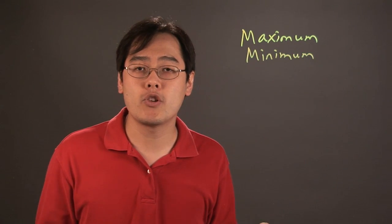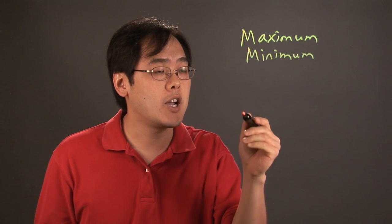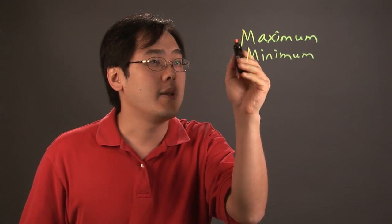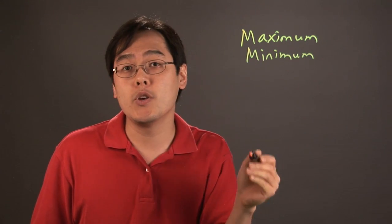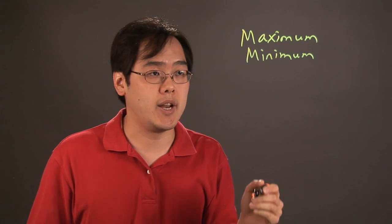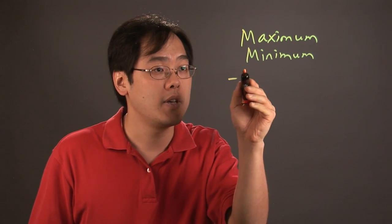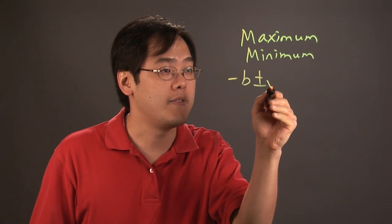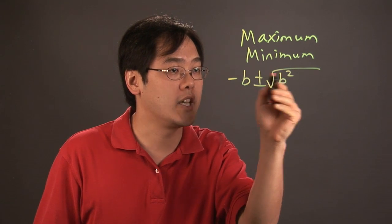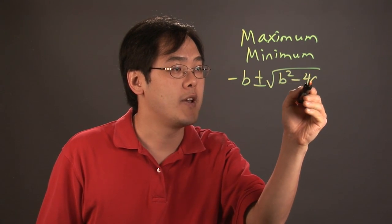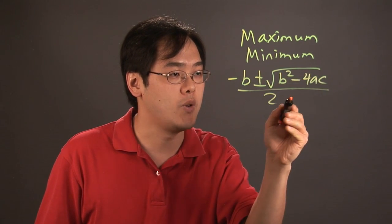But when it comes to applying the quadratic equation, there's a couple of things to consider. Now besides maximum minimum, they may also give you a function that might require to use the quadratic equation. And sometimes it may be necessary to, if not factor, use the quadratic formula: negative b plus or minus square root of b squared minus 4ac over 2a.